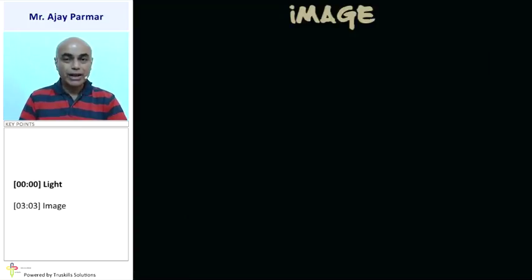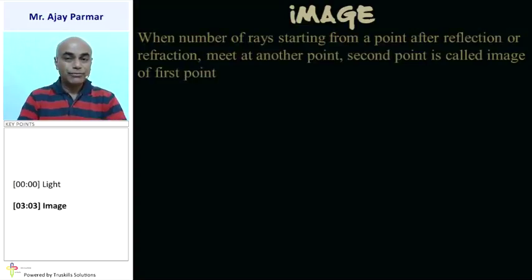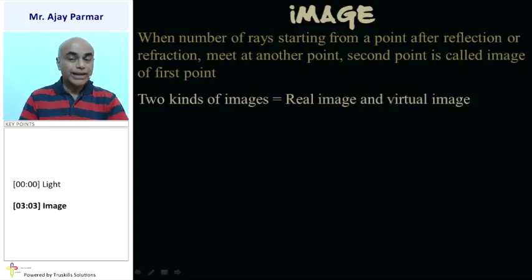When we discuss about light, obviously we need to discuss about images. When the number of rays starting from a point, after reflection or refraction, meet at a point, then that new point, the second point, is called the image of that first point. There are basically two kinds of images: number one, real images, and number two, virtual images.